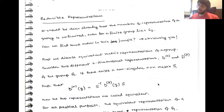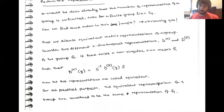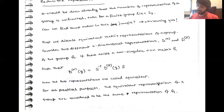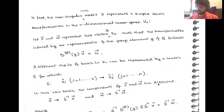First, we are going to discuss something called equivalence and equivalent representations. We have two representations D-alpha and D-beta of a group. Suppose there exists a non-singular n×n matrix S such that D-alpha equals S-inverse D-beta S. Then these two representations D-alpha and D-beta are going to be called equivalent representations, and for our purposes these are going to be considered the same representations of G.